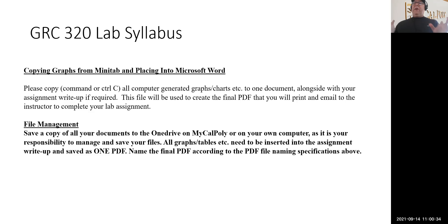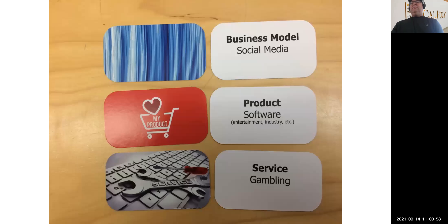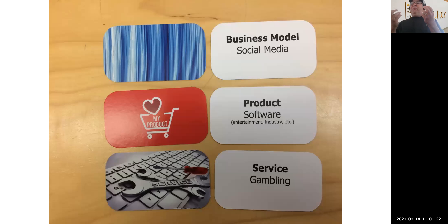The lab is 125 points total, going all the way to dead week. You'll use those last few weeks to work with your groups developing your AQP projects, which we'll cover in another video. Now let's talk about the first lab. The first lab is a game I developed — originally for another course, GRC 411 — but we go over it in weeks one and two of GRC 320 about products and services.